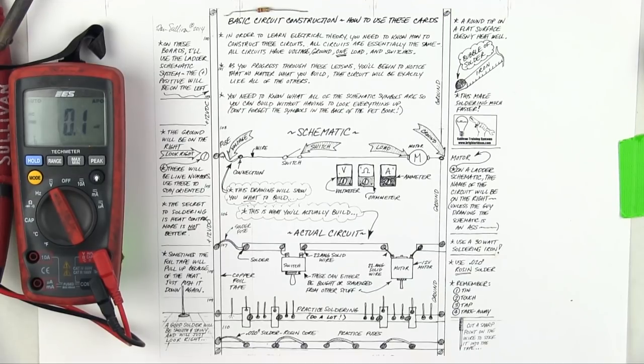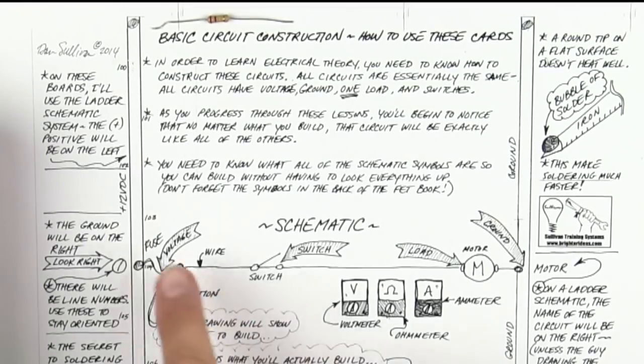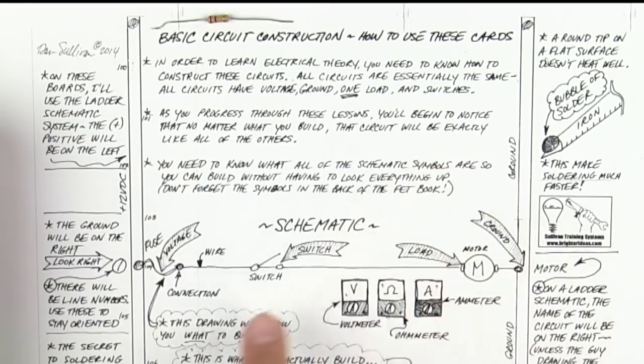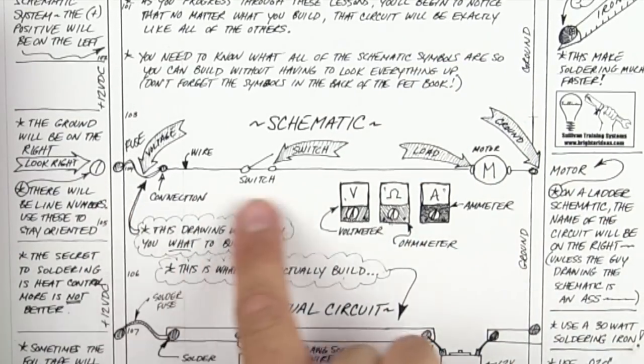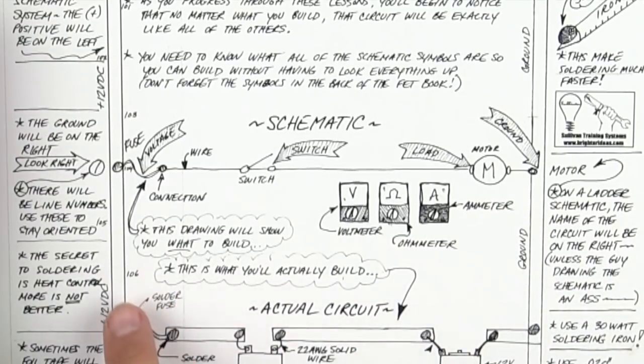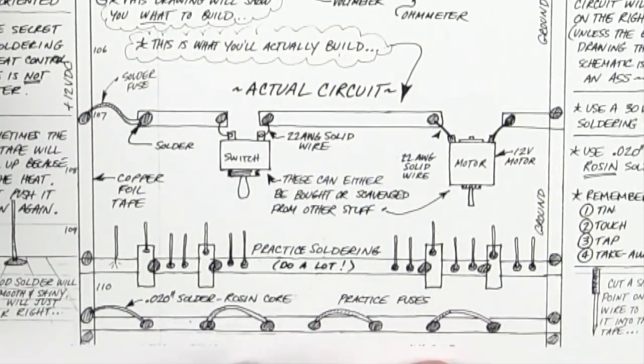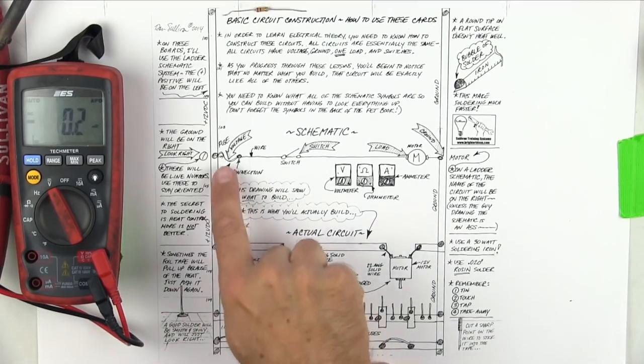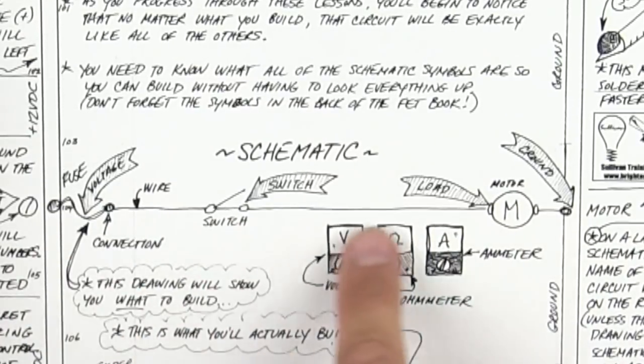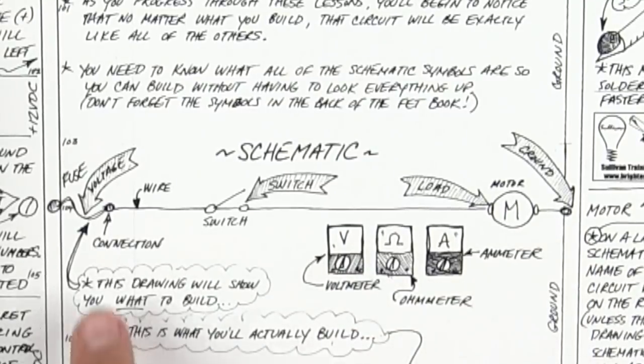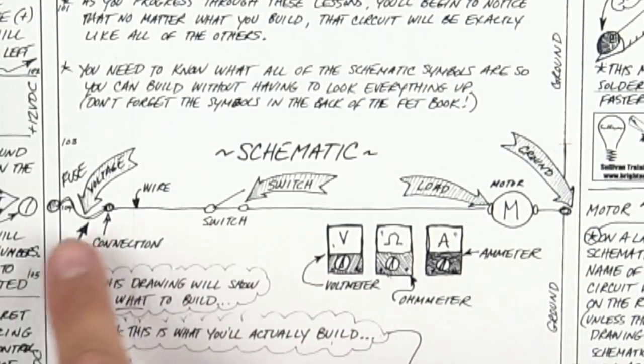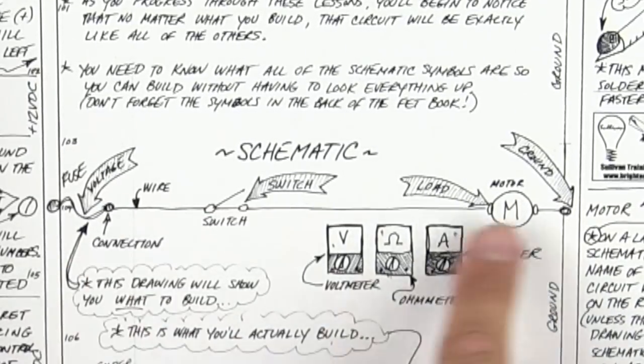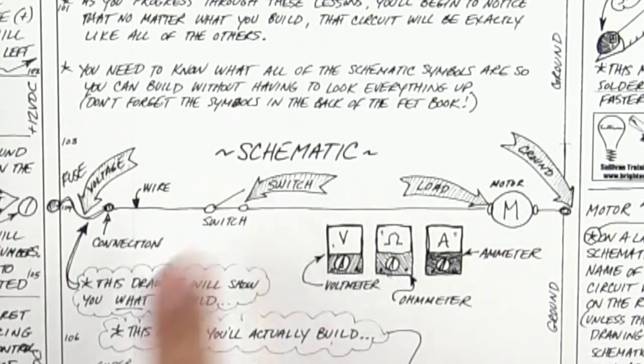First of all, the instructions will usually be on the top, followed by the schematic of what you're building, and then near the bottom will be the actual circuit that you'll be creating. When you see the single line, that means that's just the schematic you're just supposed to read that and understand it. In this case, power, ground, load, and switch—that's the basic component of every circuit: one load, a positive and negative, and switching.